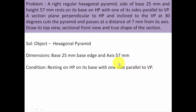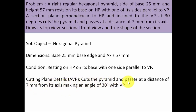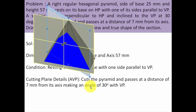Now regarding the cutting plane detail: it cuts the pyramid and passes at a distance of 7 millimeters from its axis, making an angle of 30 degrees with VP. This cutting plane is perpendicular to HP. If there is a cutting plane perpendicular to HP, when you look at it from the top it would appear as a line. At the same time, that line would be making an angle of 30 degrees with the vertical plane, meaning 30 degrees with the XY line from the top view.